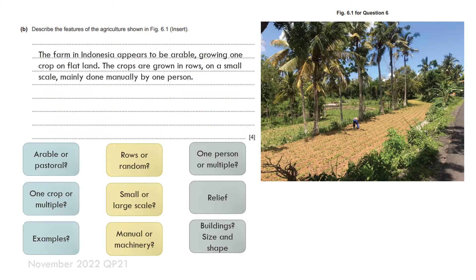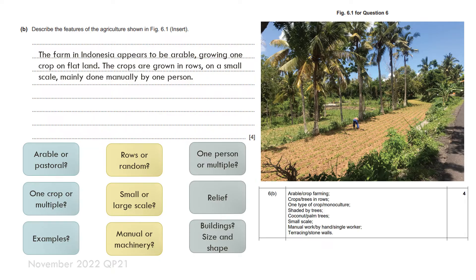To start off we can say that the farm in Indonesia appears to be arable. It's growing one crop on flat lands. The crops are grown in rows on a small scale mainly done manually by one person. There are huge amounts of things I've been able to identify from that picture and if I look at here I am covering more than four marks.